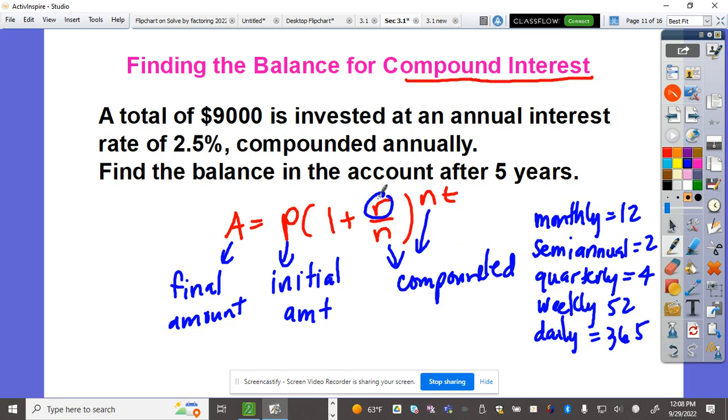R means the rate in decimal form, not in percent. And T is the number of years.